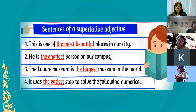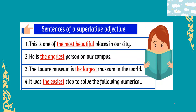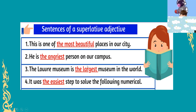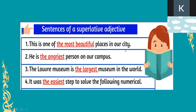Let's have this one. Will you please read our examples for superlative adjective? Bacon, will you please read number one? 'This is one of the most beautiful places in our city.' Okay, thank you, Bacon. Look at our example. This is one compared to many — one of the most beautiful places in our city. So this is the extreme, the most. You are going to use 'the most' plus the adjective. We use 'most' because our adjective 'beautiful' has three syllables.